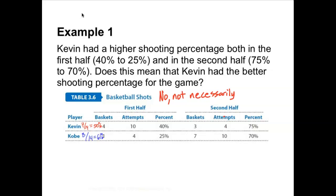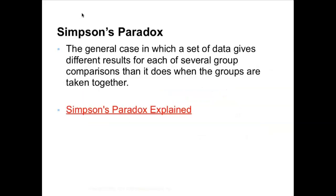This is an idea called Simpson's Paradox. It's the general case in which a set of data can give different results for each of several group comparisons than it does when the groups are taken together. I'll give you a quick visual and then we're going to watch a little video, like a three minute video, where this really excited British guy explains this.